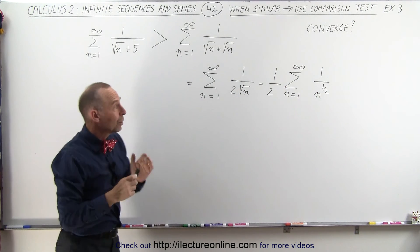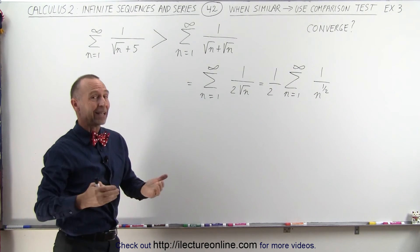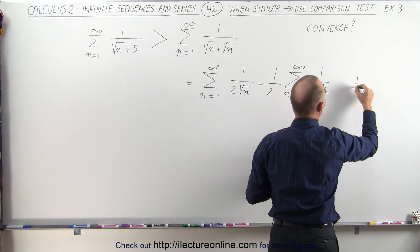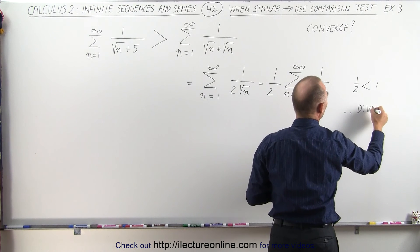Now we realize that looks a lot like the p-series. Well that's exactly the p-series, and we know that the exponent is less than 1, since 1 half is less than 1. We therefore know that this series will diverge.